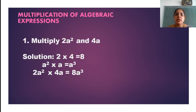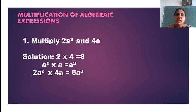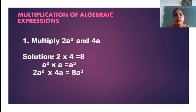The first example is: multiply 2a squared and 4a. Both are monomials here, so I am multiplying one monomial by the other monomial.